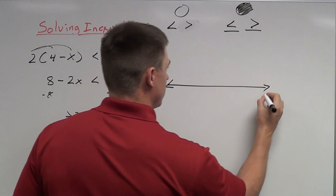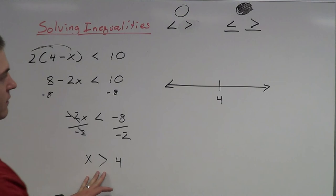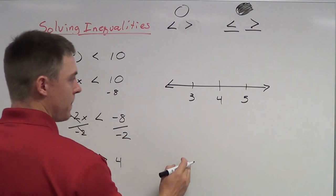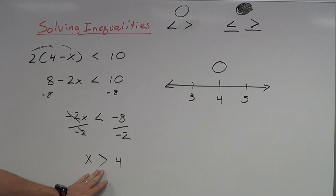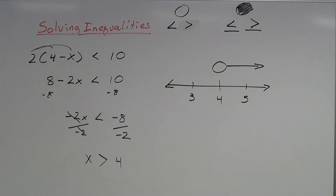So let's graph this. I'll draw a number line with 4 as the key number, putting 3 to the left and 5 to the right. I'm going to use an open circle at 4 since 4 is not included. All my solutions are bigger than 4, so I shade in the direction of the bigger numbers — that way to the right.